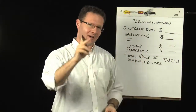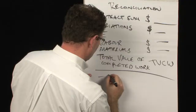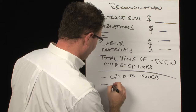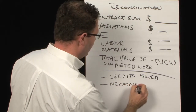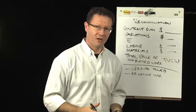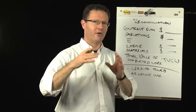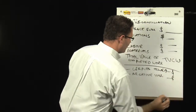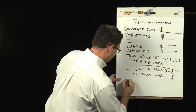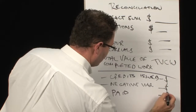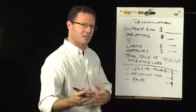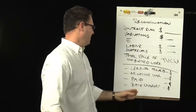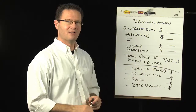What comes off that total is: credits issued if you've issued them, negative variations — reductions in scope. If someone says 'I'm taking this out of your scope,' you need to agree on a dollar value and put that there. So minus credits, minus negative variations, obviously amounts paid, and back charges and deductions or set-offs. If you can agree on those — which no one ever does — but anyway, that's another item there.